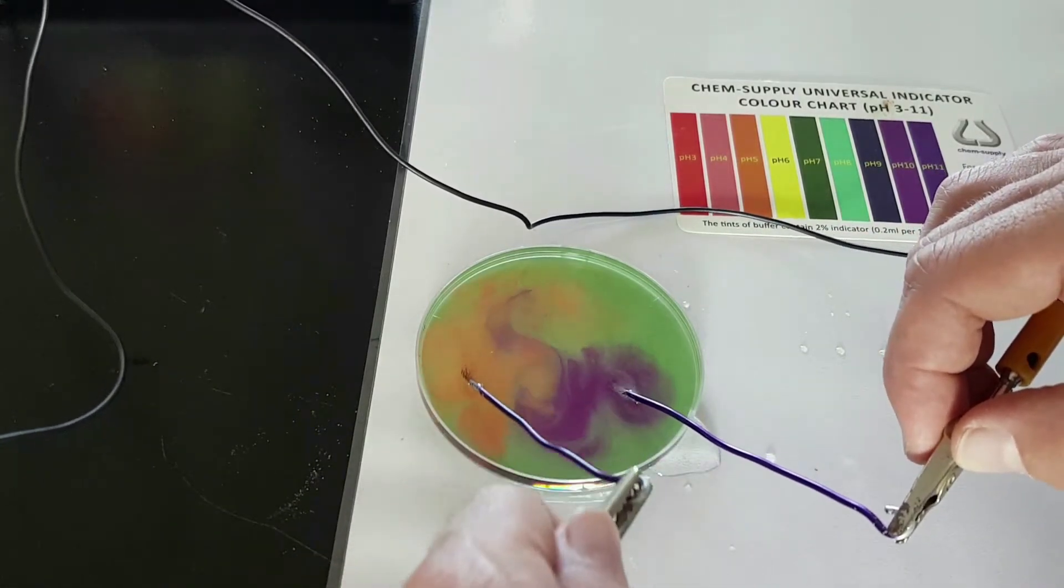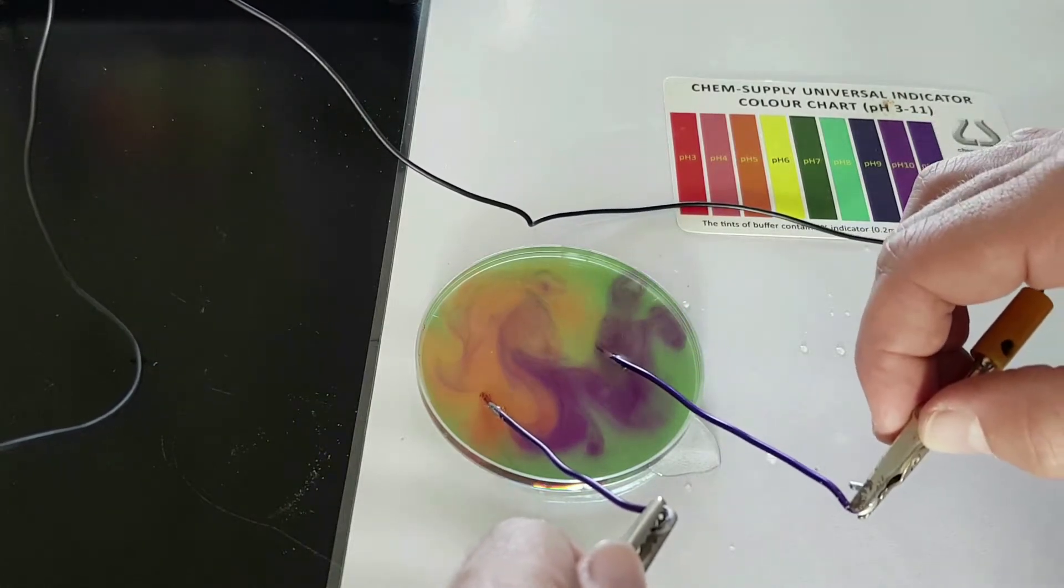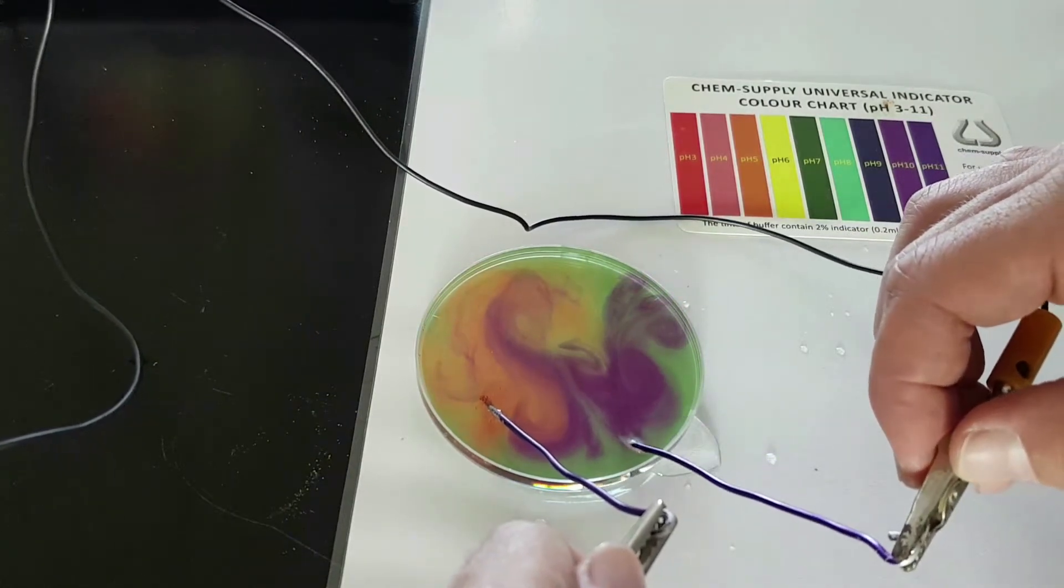The gas on the left turning red is hydrogen and the hydroxide on the right is turning purple which shows that it is basic.